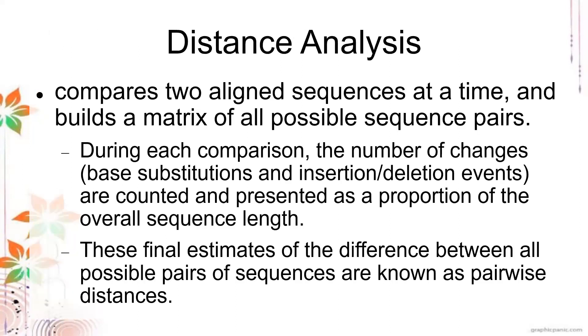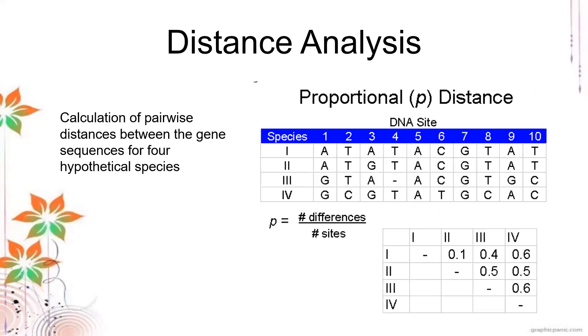What is distance analysis? As the name suggests, you compare two aligned sequences at a time and determine how similar or dissimilar they are with one another. You build a matrix of all possible sequence pairs. During each comparison, the number of changes or base substitutions or indel events are counted and presented as a proportion of the overall sequence length. These final estimates of the difference between all possible pairs are known as pairwise distance. For example, you have four sequences here. These sequences are already aligned.